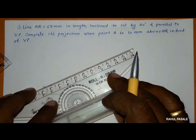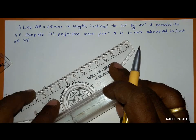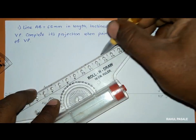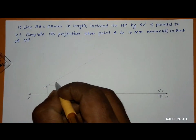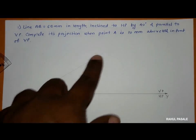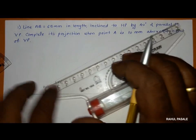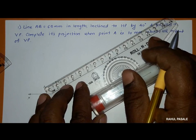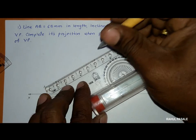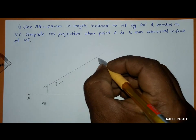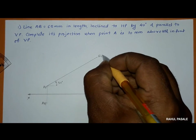This angle with the HP is marked in the front view. Since this is the true angle, we are going to mark the true length on this line. The length is given as 65 mm, so from point A we locate point B at 65 mm length.